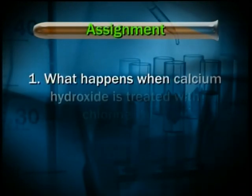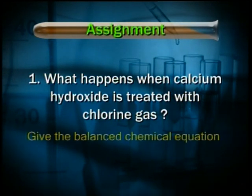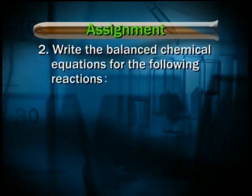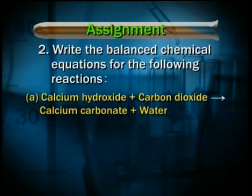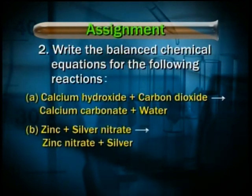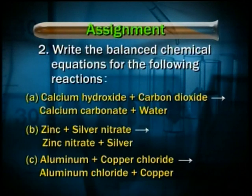Assignment: One — what happens when calcium hydroxide is treated with chlorine gas? Give the balanced chemical equation. Two — write the balanced chemical equations for: A) Ca(OH)₂ + CO₂ = CaCO₃ + H₂O; B) Zn + 2AgNO₃ = Zn(NO₃)₂ + 2Ag; C) 2Al + 3CuCl₂ = 2AlCl₃ + 3Cu. Keep identifying chemical reactions occurring all around you and keep writing balanced equations for them. Goodbye.